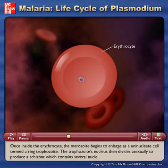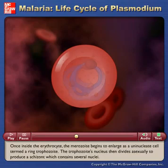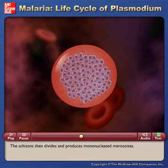Once inside the erythrocyte, the merozoite begins to enlarge as a uninucleate cell termed a ring trophozoite. The trophozoite's nucleus then divides asexually to produce a schizont which contains several nuclei. The schizont then divides and produces mononucleated merozoites.